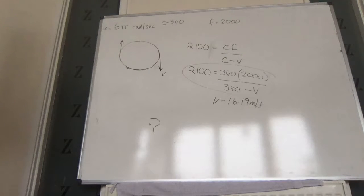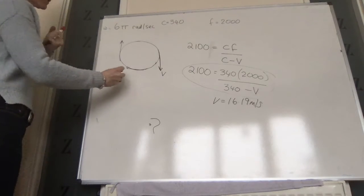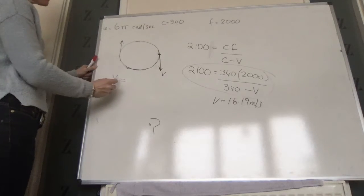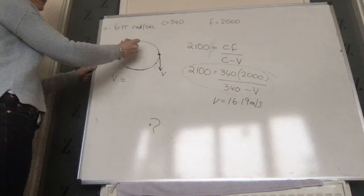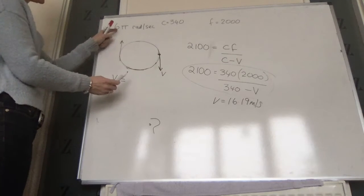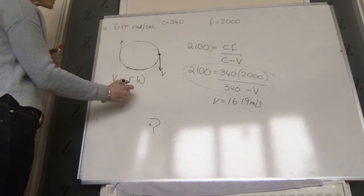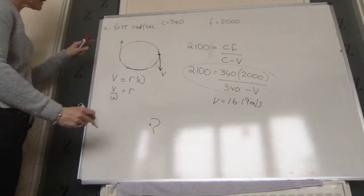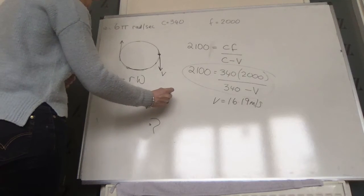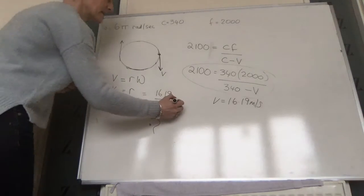The question asks for the radius of the circle. We use the relationship between linear speed and angular speed: V equals r·omega. So r equals V divided by omega, where omega is 6π. Therefore r equals 16.19 divided by 6π, giving a radius of 0.86 metres.